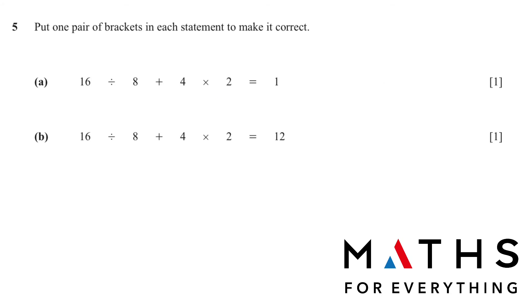Question number 5 is a little tricky. Put one pair of brackets in each statement to make it correct. So you will have to try and figure out where it is that you need to put the bracket. But for a starter, you know that 16 is the highest number here. So 16 divided by what will give you 1? 16 divided by 16 will give you 1. So if you put a bracket here, this, when you put in the calculator, you will get 16.